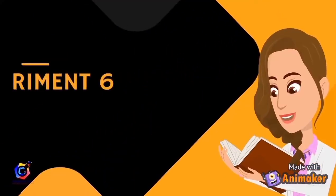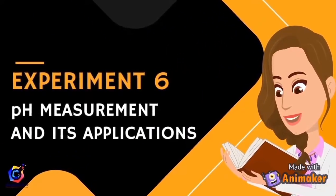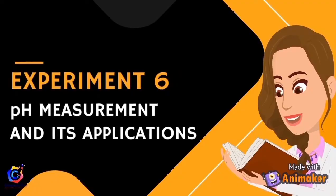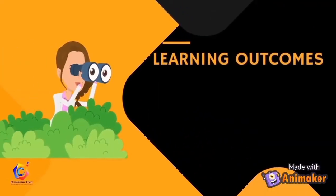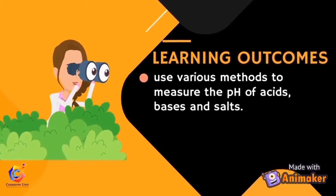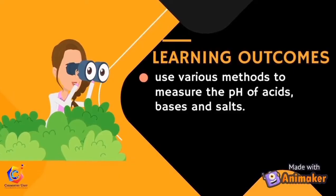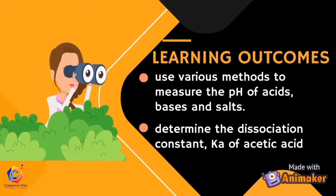Hi my students. Today we are going over experiment 6: pH measurement and its application. The learning outcomes of this experiment are: first, to use various methods to measure the pH of acids, bases, and salts; and second, to determine the dissociation constant Ka of acetic acid.